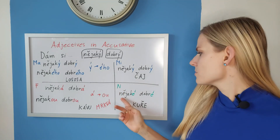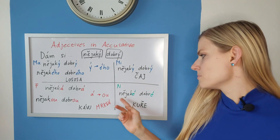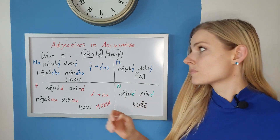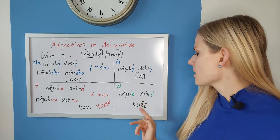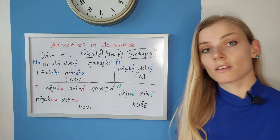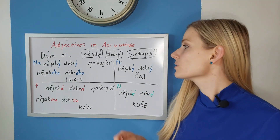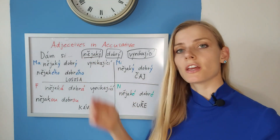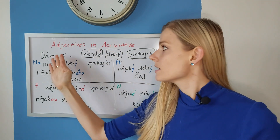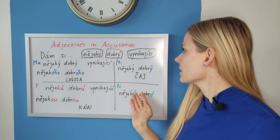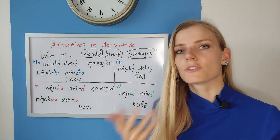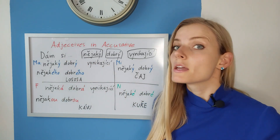And last, neuters. We work with the base form nějaké dobré kuře: Dám si nějaké dobré kuře. Again there is no change. So we've been looking at adjectives that change with gender: nějaký, nějaká, nějaké — and dobrý, dobrá, dobré in the nominative.